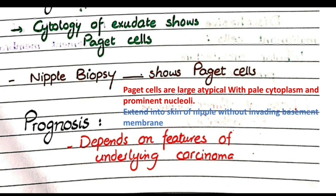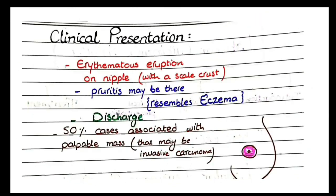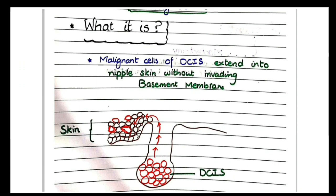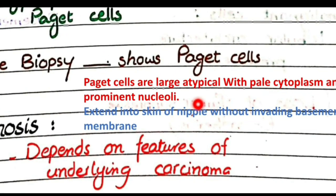Paget cells are large atypical cells with pale cytoplasm and prominent nucleoli, and they extend into the skin of nipple without invading the basement membrane. On microscopy of the biopsy specimen, you see normal skin with Paget cells incorporated into it. These Paget cells differ from skin cells by being large in size, having pale cytoplasm, and having prominent nucleoli.